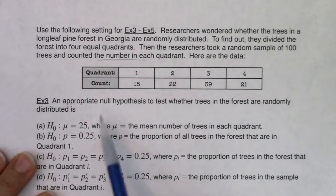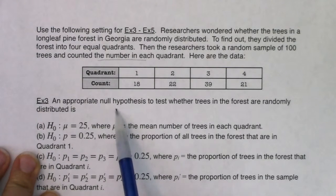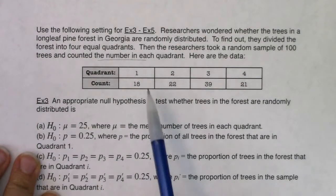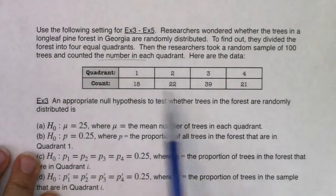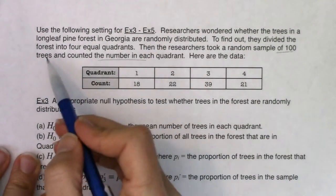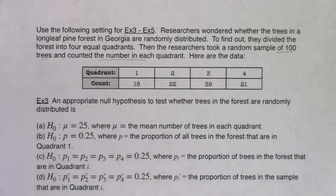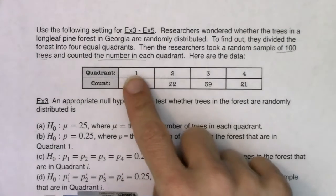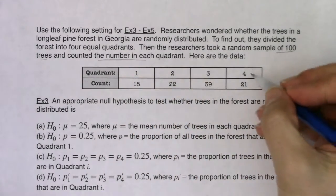And then it looks like we have to figure out the appropriate null to test in terms of whether trees are randomly distributed. So if I look at this, what on earth is the variable? I see I have a random sample of 100 trees. What was I keeping track of for each tree? Was I keeping track of how old they were, how many leaves they had, whether they were oak or not? No, I was keeping track of what quadrant they were in.